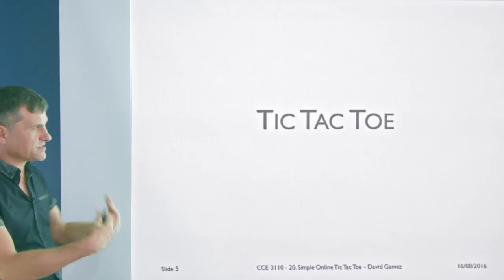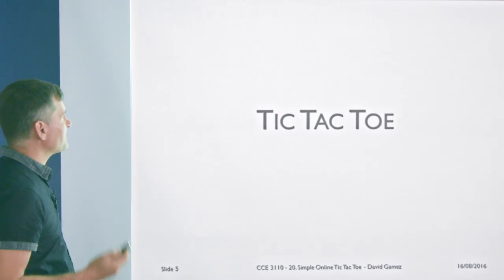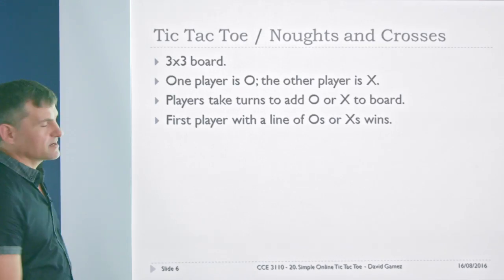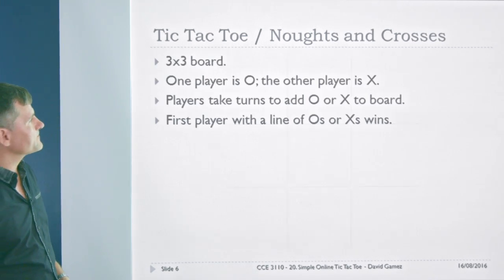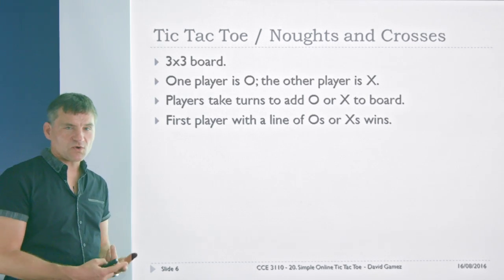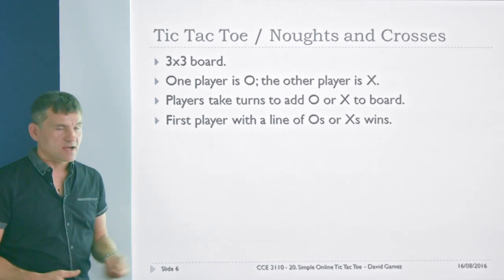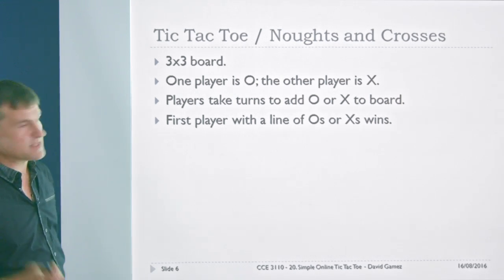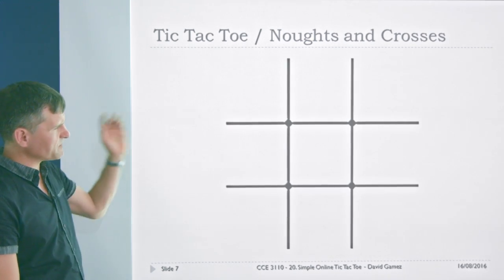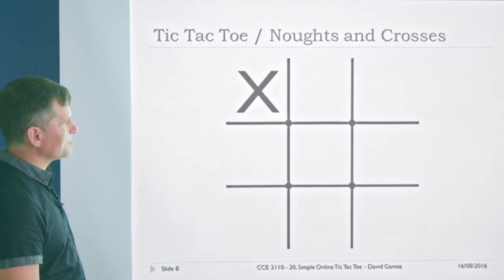Tic-tac-toe — you probably played it as a kid, perhaps lined up for the annual championships as we speak. It's pretty basic: you've got a three-by-three board. One player is nought, the other is cross. The players take turns adding a nought or cross to the board, and the first player with a line of noughts or crosses wins. So here we have the board, and the first player — let's suppose they're a cross — chooses to put their mark there.